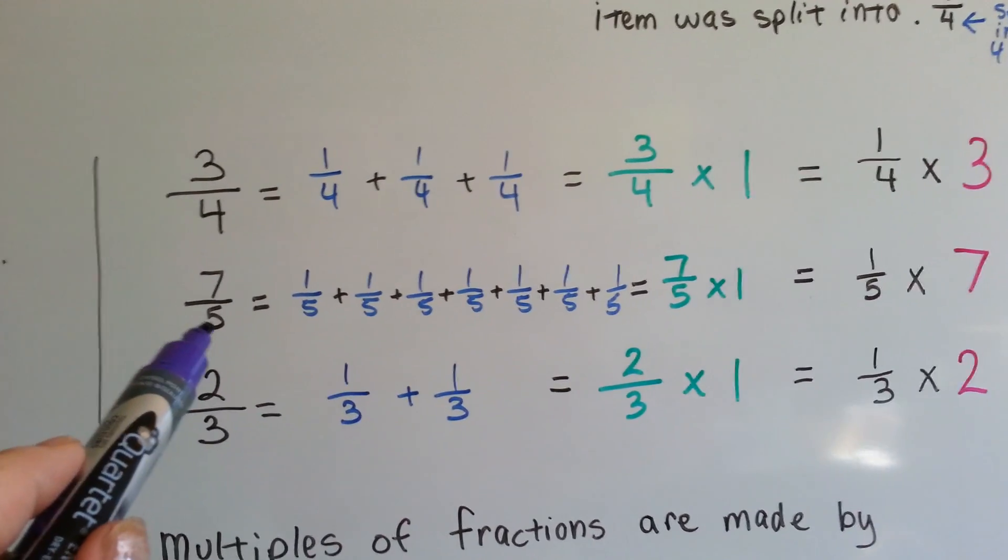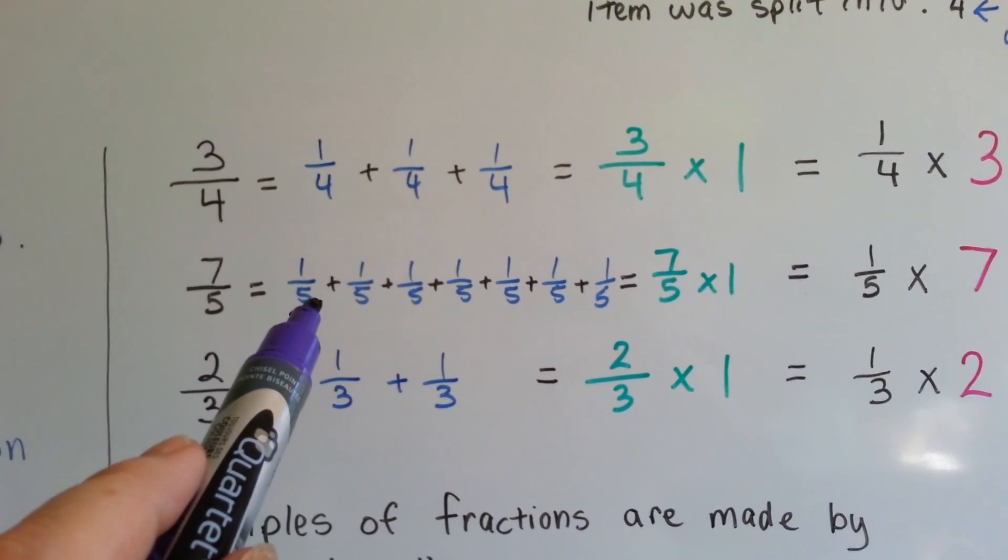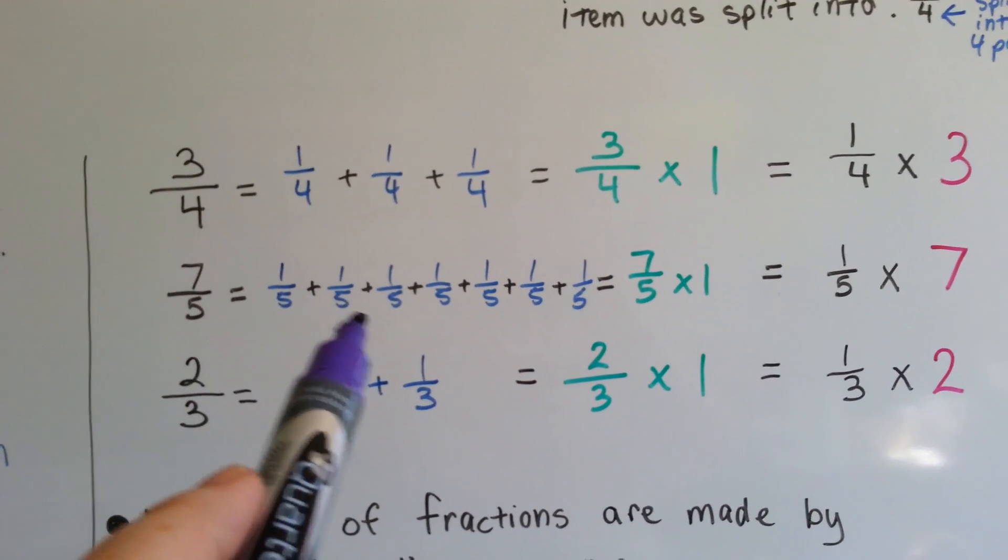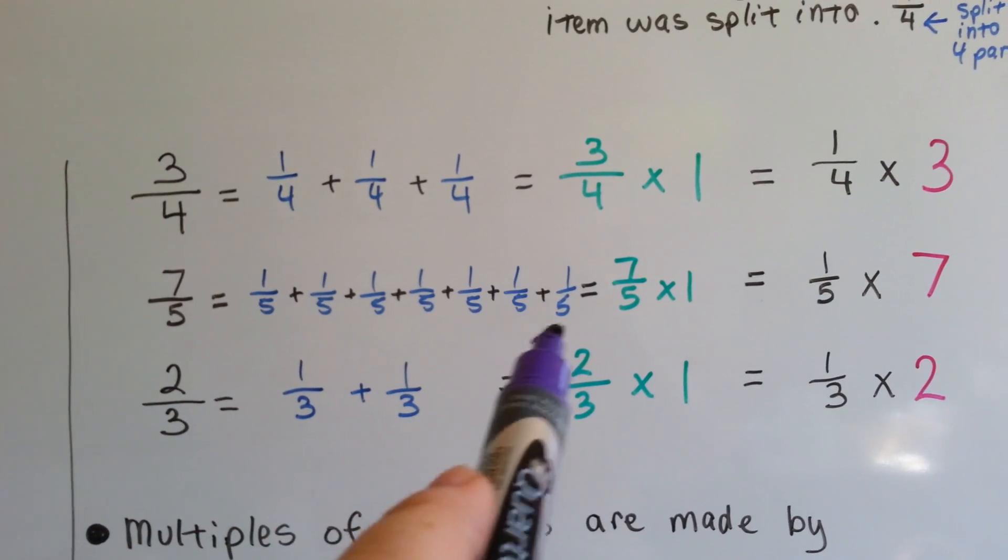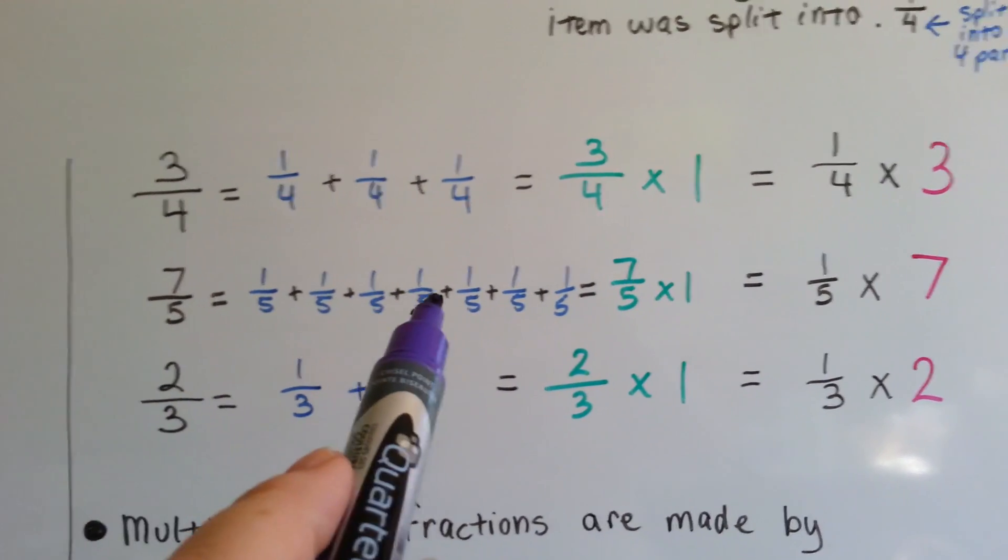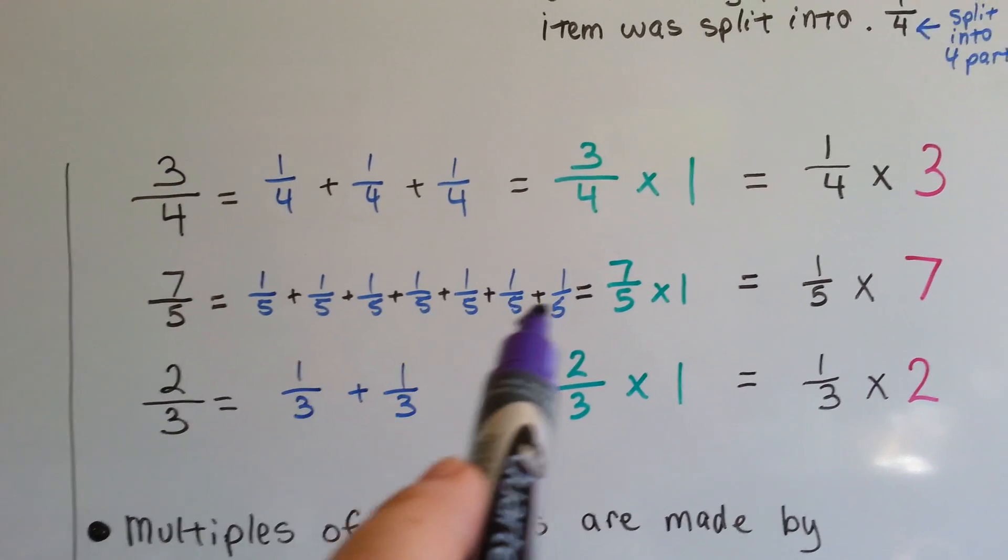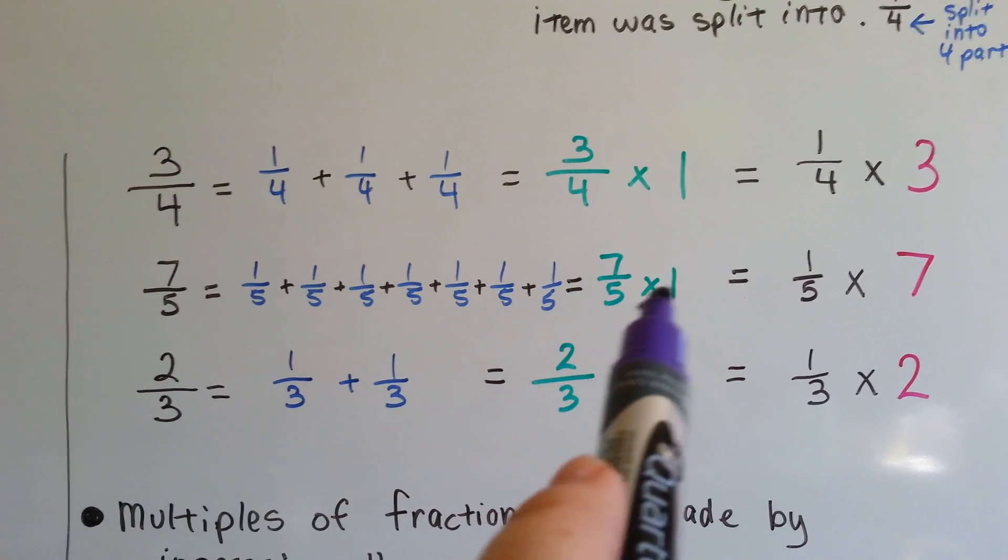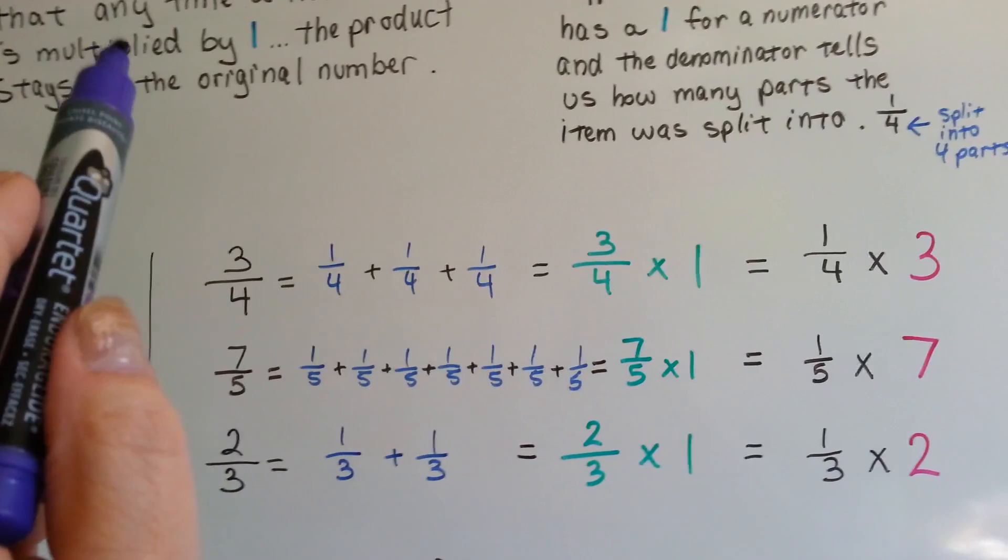It's also the same as 3 fourths times 1. That's the identity property working right there. Any number times 1 stays itself. It stays as 3 fourths. It could also be shown as 1 fourth times 3. 7 fifths can be 1 fifth 7 times, you know, added 7 times in a row. 1, 2, 3, 4, 5, 6, 7. And if we added all these 1 fifths up, these 7 1 fifths up, it would equal 7 fifths. It can also be shown as 7 fifths times 1. Identity property.